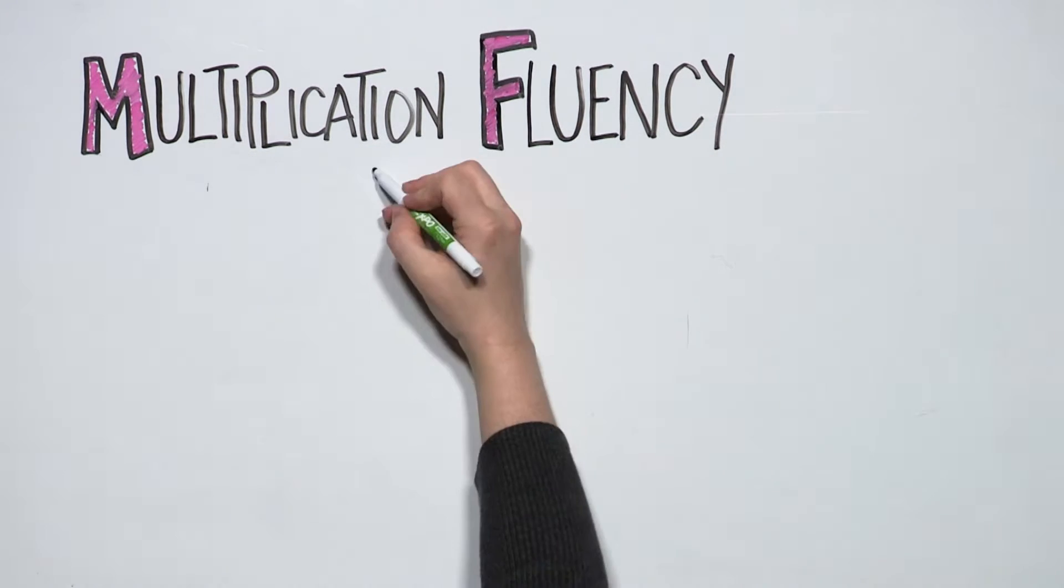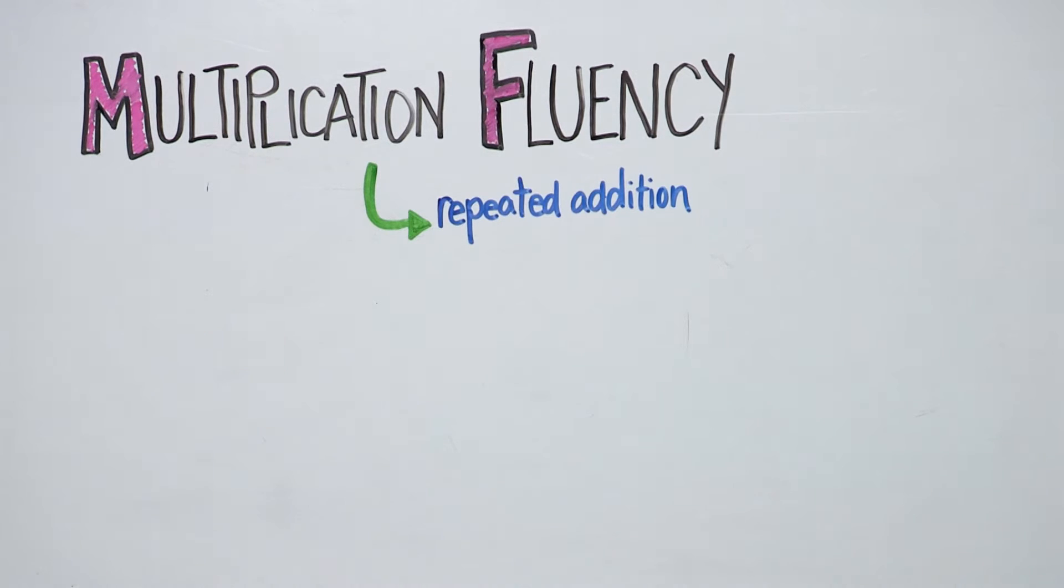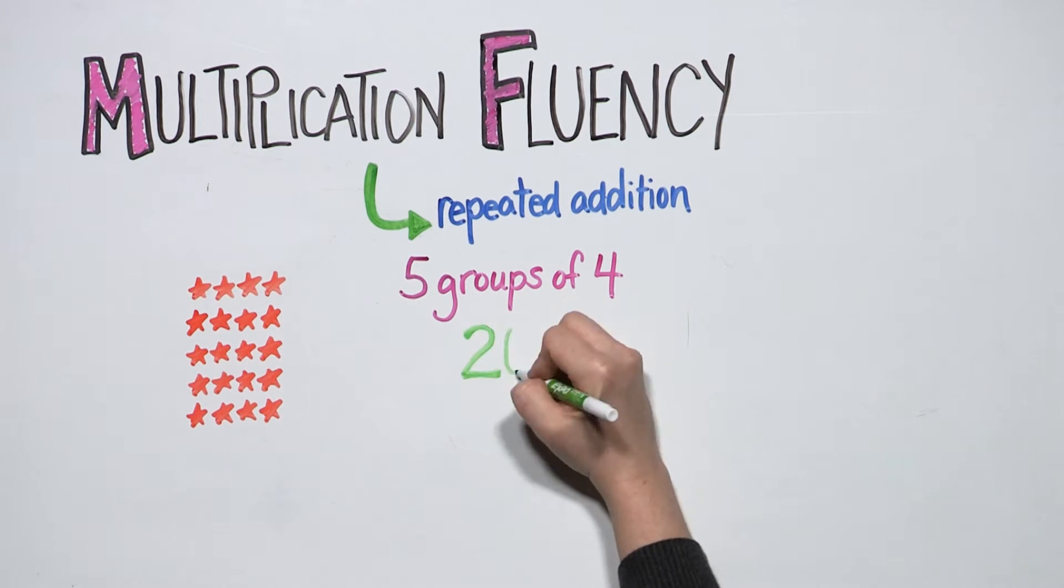Your child's introduction to multiplication is through repeated addition. He will draw an array to visualize or see five groups of four stars. He will count the stars and find the total.